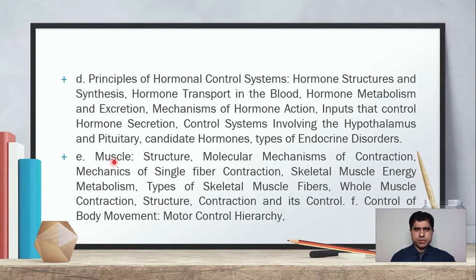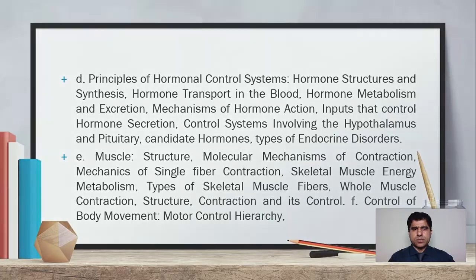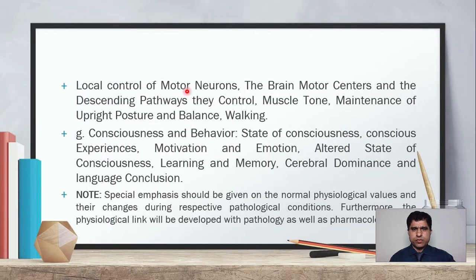Subheading E will be muscles, covering structure, molecular mechanism of contraction, how muscles contract, mechanics of single fiber contraction, skeletal muscle energy metabolism, types of skeletal muscle fibers, whole muscle contraction, structure, and contraction control. Subheading F will be control of body movements, including motor control hierarchy, local control of motor neurons, brain motor centers and descending pathways, muscle tone, maintenance of upright posture and balance, and walking.